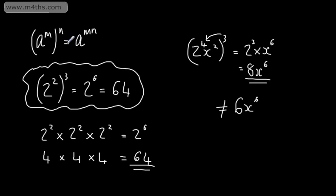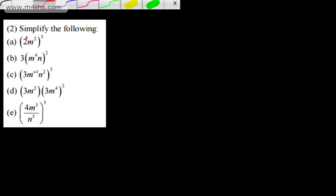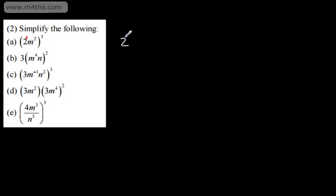Let's go ahead and use this law on some examples. In question 2, we're asked to simplify the following. I always suggest that students write a little 1 here if there isn't a power shown. So what we're going to have is 2 to the power of 3, and then m to the power of 6. 2 to the power of 3 is 8, so we have 8m to the power of 6.